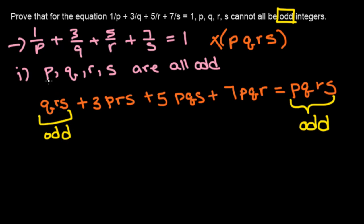Because qrs, again, we're assuming that they're all odd. And then prs, pqs, pqr are all odd. Because again, we're assuming that they're all odd. So let's just write that down.